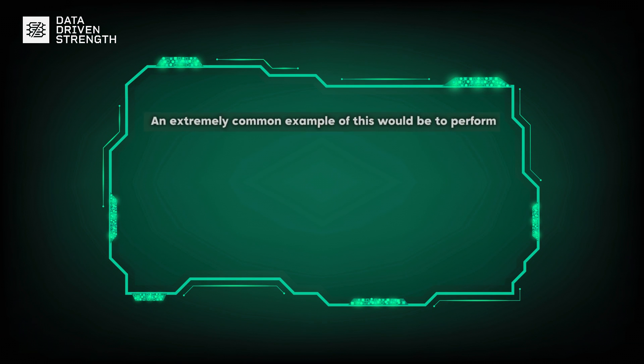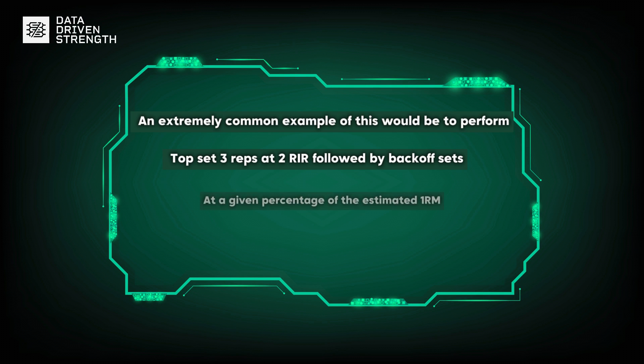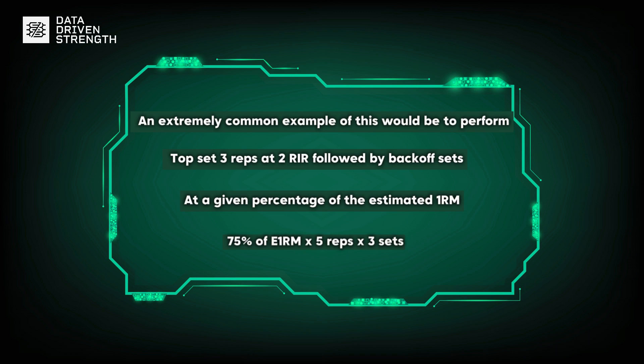This number can be used for a variety of things. Since proximity to failure seems to have a minimal influence on maximal strength outcomes, it's not uncommon to see protocols that have lifters training with a decent amount of reps in the tank. For these types of protocols, subjective load prescription methods like RIR are more prone to inaccuracy. Thus, coaches generally opt for other options — a common example being a top set of three reps at two RIR, followed by back-off sets at a given percentage of that estimated 1RM, such as 75% for three sets of five.